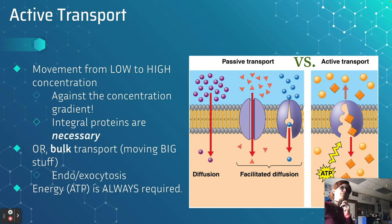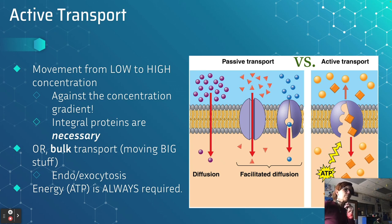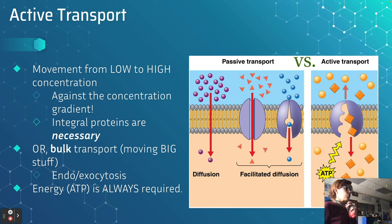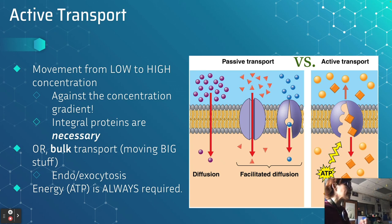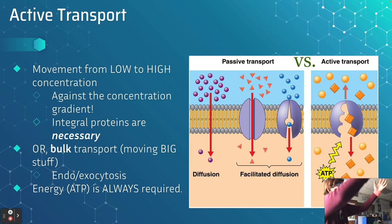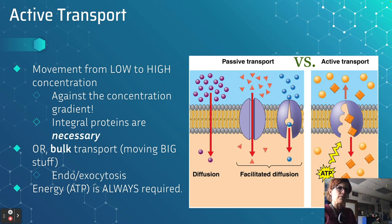Active transport: movement from low to high concentration — going against the concentration gradient — integral proteins are necessary and ATP is always required. Passive transport: small nonpolar molecules pass between phospholipids; others travel through a channel protein (facilitated diffusion, no ATP). Active transport also involves endocytosis and exocytosis — bulk transport — where an entire vesicle pinches in or pushes out because the molecules are too big to pass through a protein. Energy is always required for both endocytosis and exocytosis. That's everything — we got it done in almost exactly an hour.